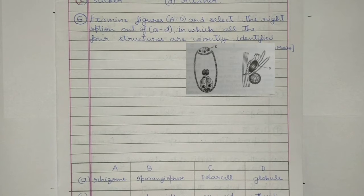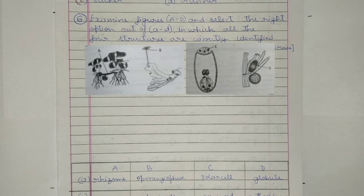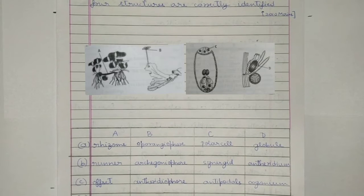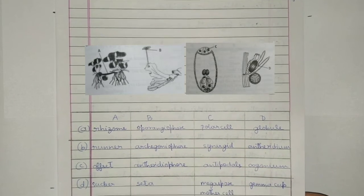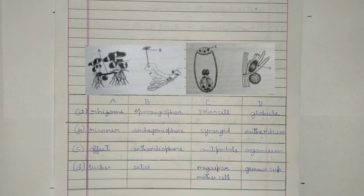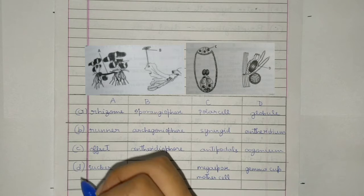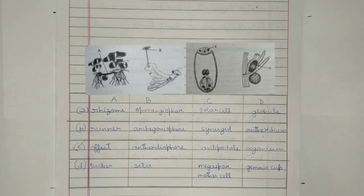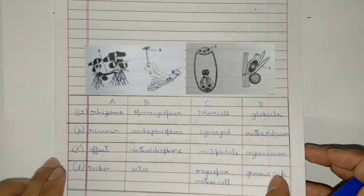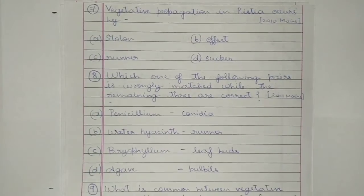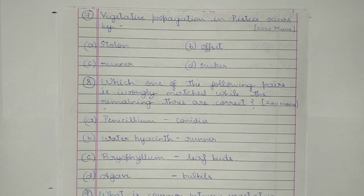Question 6. Examine figures a to d and select the right option in which all four structures are correctly identified: a) is offset, b) is antheridium, c) are antipodals, and d) is eubonium. The correct option is c. Question 7. Vegetative propagation in Pistia occurs by: a) stolon, b) offset, c) runner, or d) sucker. The answer is b) offset.